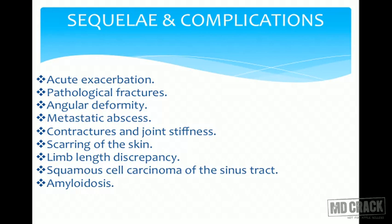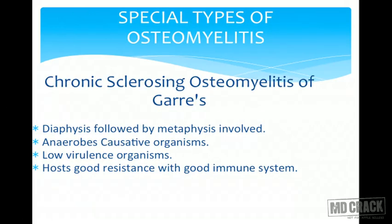Sequelae and complications of chronic osteomyelitis include: acute exacerbations, pathological fractures, angular deformity with non-union, metastatic abscesses, joint stiffness above and below the affected bone such as ankle or knee stiffness in tibial disease, scarring of the skin, and limb length discrepancy — which is very common. Rare but important complications are squamous cell carcinoma of the sinus tract and amyloidosis.